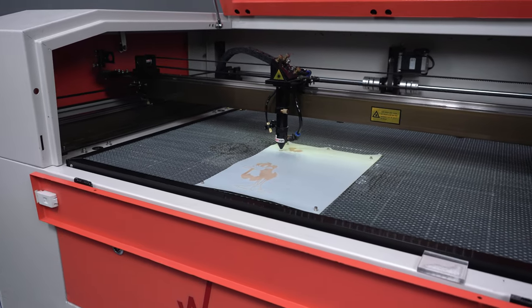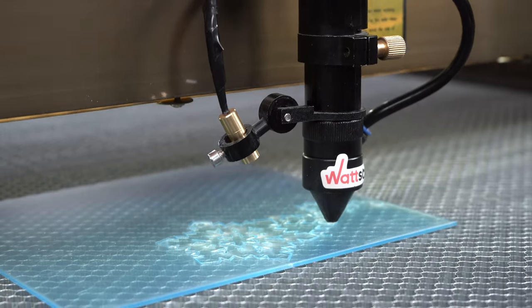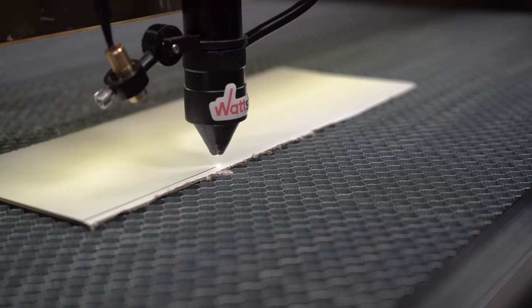Engraving can be done with less power than cutting. And the more powerful the tube, the faster it can work and the thicker the material it can cut through.